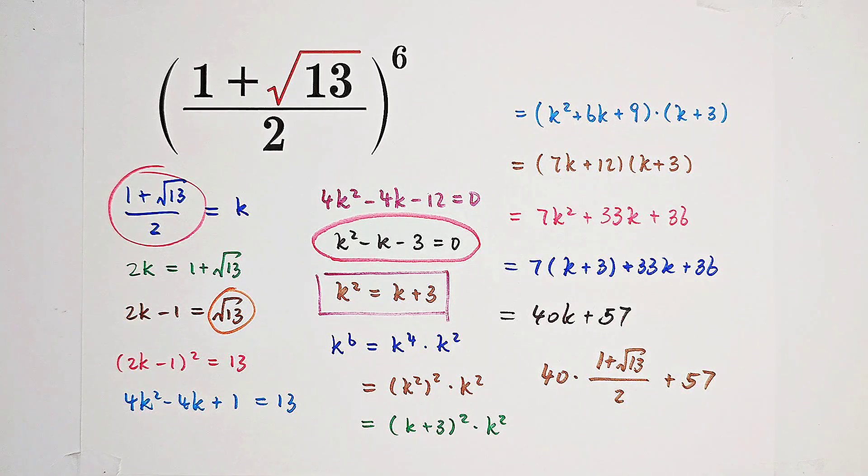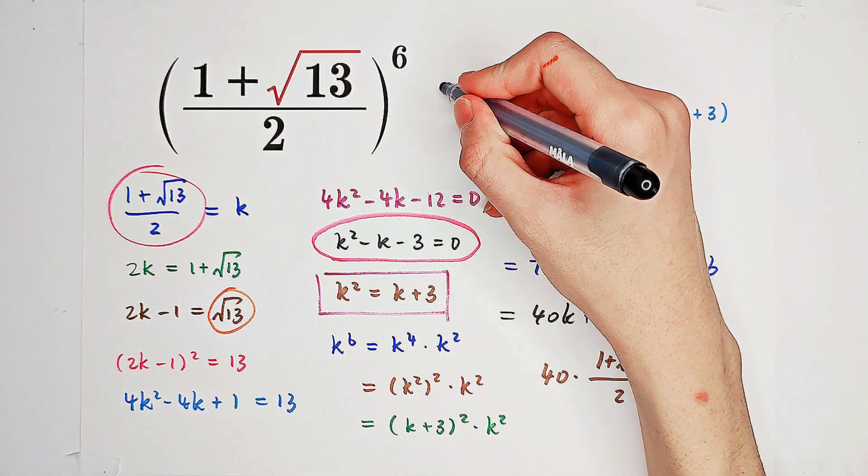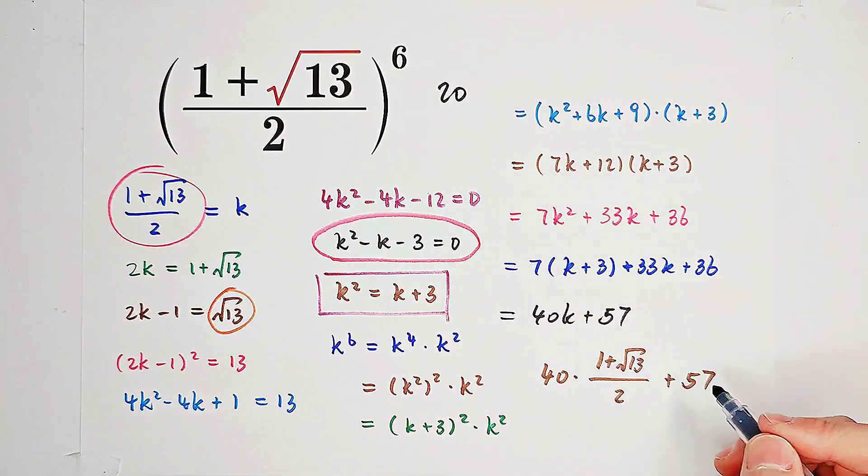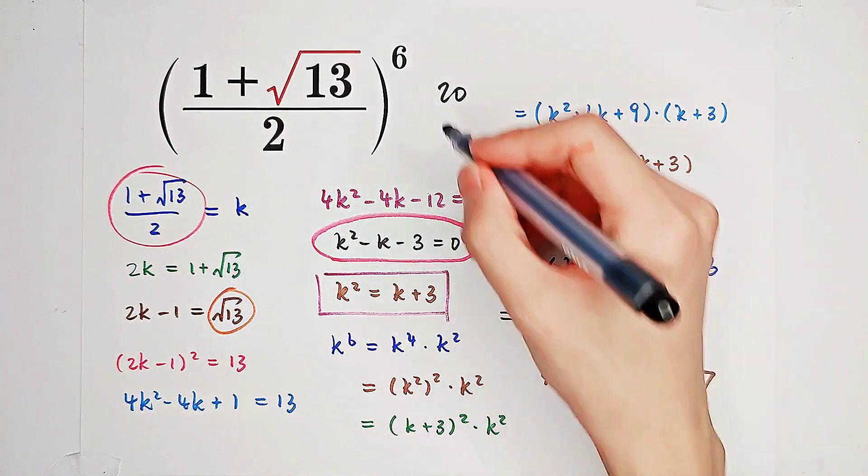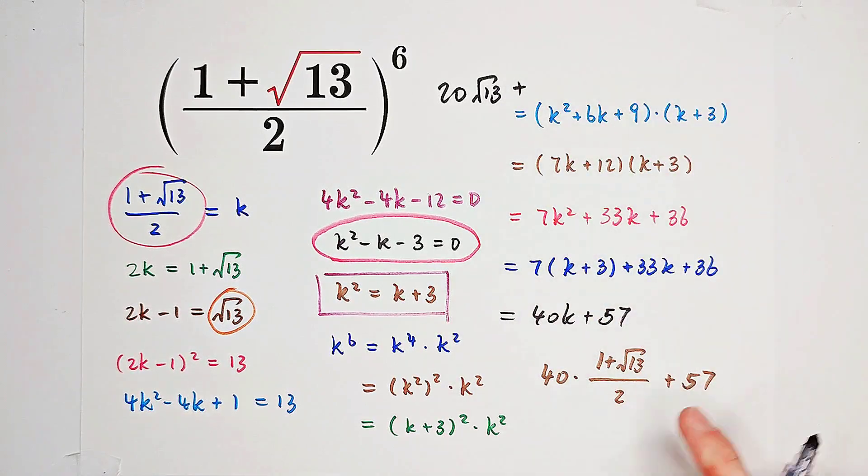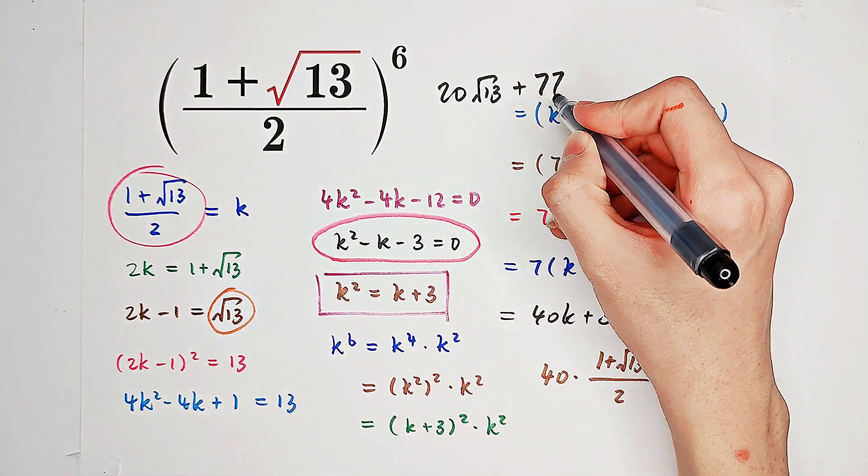And now, we just get our answer. It is 20 times square root of 13, then plus 20 plus 57. It is 77.